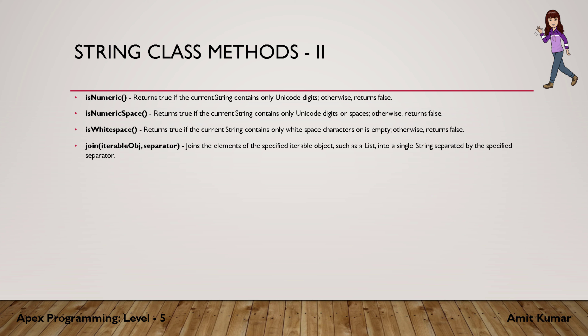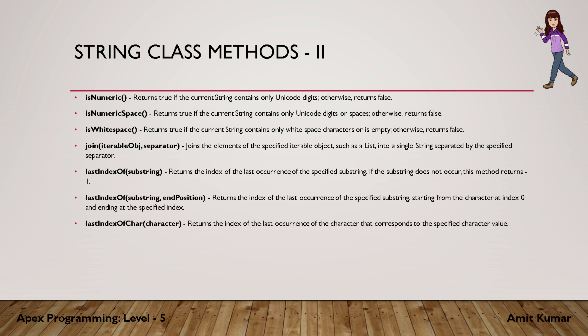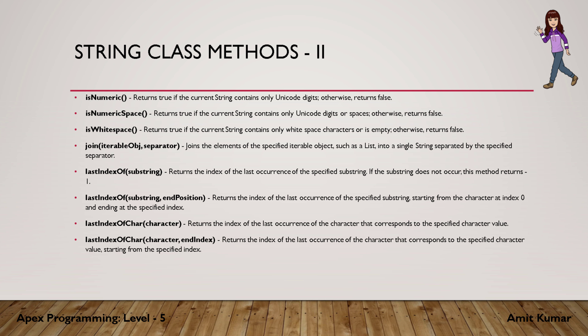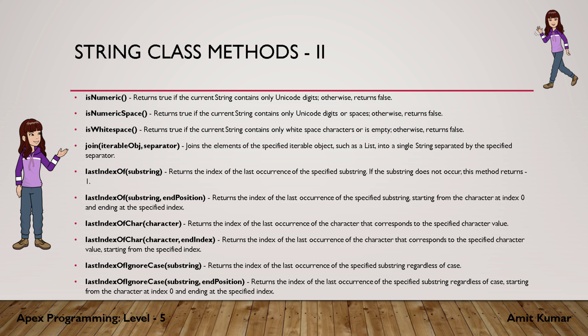The join method accepts a list and a separator string and combines the elements of the list separated by the separator and returns a single string. The lastIndexOf family includes: lastIndexOf with substring, lastIndexOf with substring and end position, lastIndexOf with a character, lastIndexOf with a character and end index, and lastIndexOfIgnoreCase — all behave similar to indexOf methods, the only difference is they check the index from the end of the string. I already discussed indexOf methods in part 1.